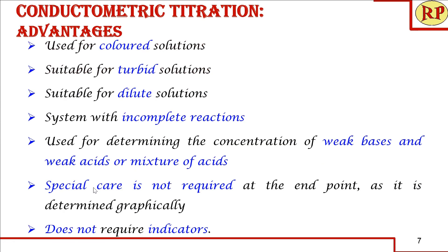Conductometric titration has several advantages. It is suitable for colored, turbid, and dilute solutions where conventional indicator-based titrations are not suitable. It can be used for weak acids, weak bases, and mixtures of acids or bases. Special care near the end point is not required — there is no need to add titrant dropwise — because the end point is determined graphically and indicators are not needed.